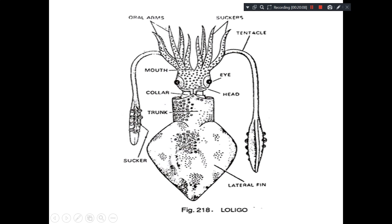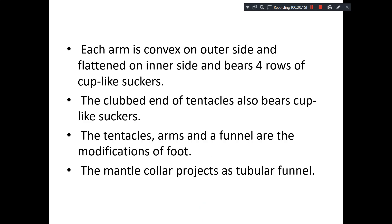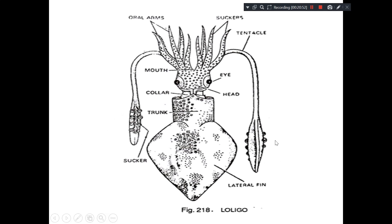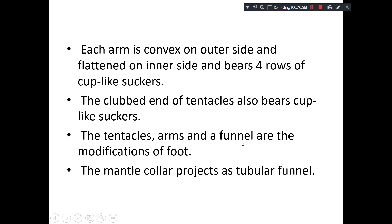With the oral arms there is also a pair of tentacles, and on the oral arms there are suckers. The arms are convex on the outer side and flattened on the inner side, and bear four rows of cup-like suckers. Even the clubbed end of the tentacles are also having cup-shaped suckers.